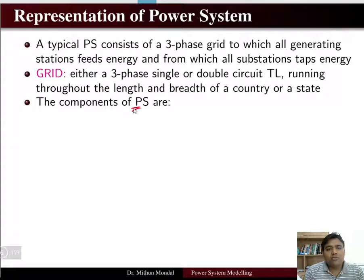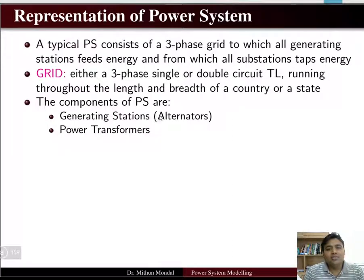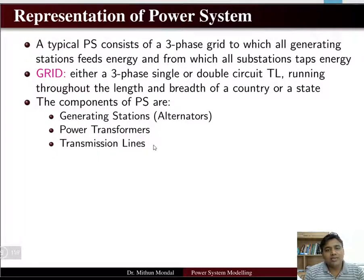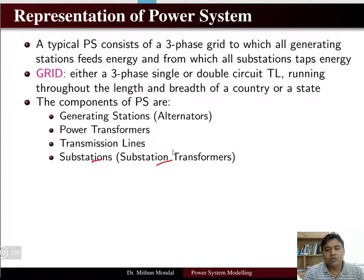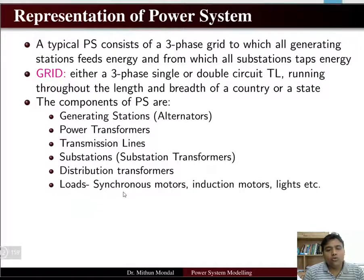The components of a power system include: generating stations or alternators, which produce electrical energy; power transformers, which increase the voltage level; transmission lines, which transmit energy over distance; substation transformers; distribution transformers; and loads. Loads can be of various categories such as synchronous motors, induction motors, lighting, etc.